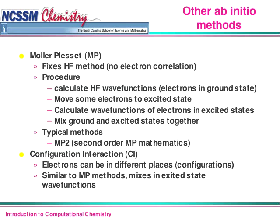Some other methods — this is just an introduction, so I'm not going to explain all of these in detail. Møller-Plesset, or MP, tries to fix some of the problems with the Hartree-Fock method. It calculates an answer, then moves some electrons from one place to another, recalculates what the electrons are doing after they've been moved, then puts them back to get a final answer. On the server there's an MP2 and an MP4 method — MP2 means second-order Møller-Plesset mathematics.